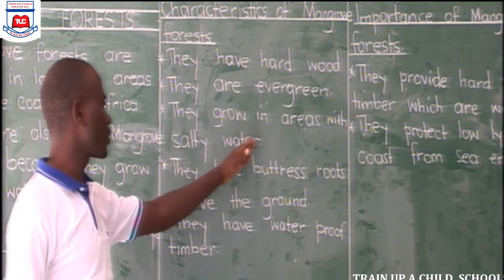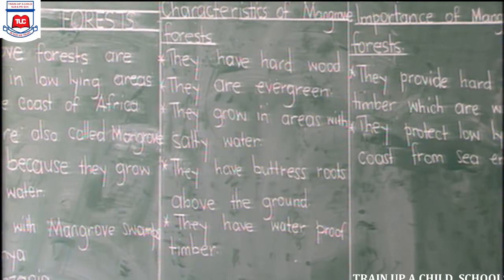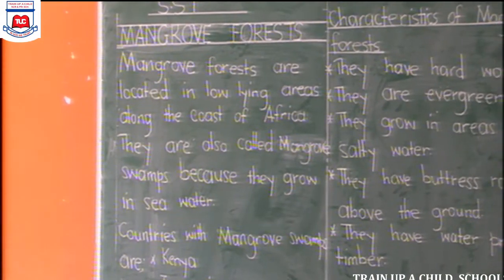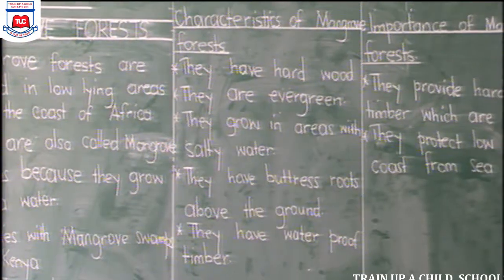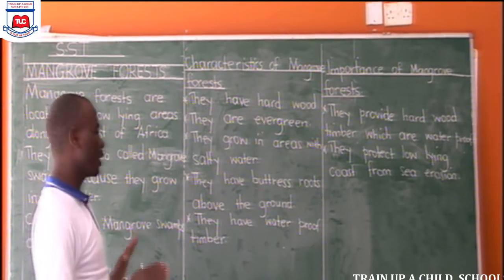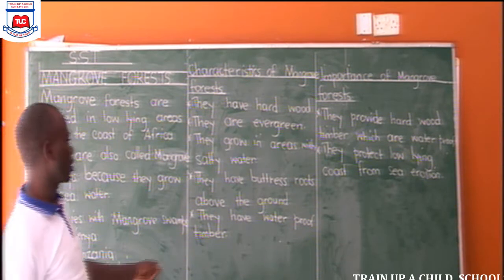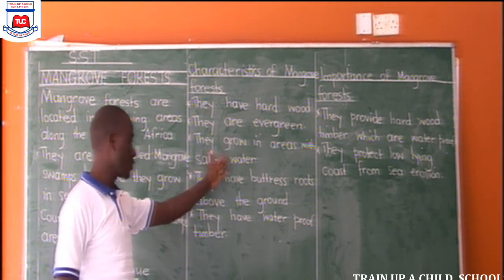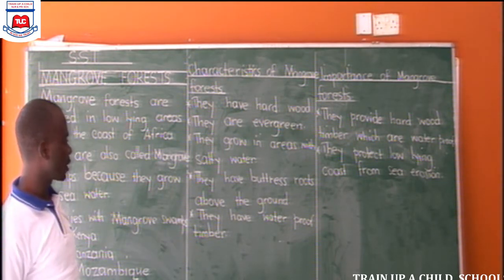Mangrove swamps grow in areas with salty water. As I have told you from the start of this lesson, only areas with salty water have mangrove swamps. That's why mangrove swamps are not common in other parts of Africa, because those parts lack salty water. You cannot find them in areas without salty water.